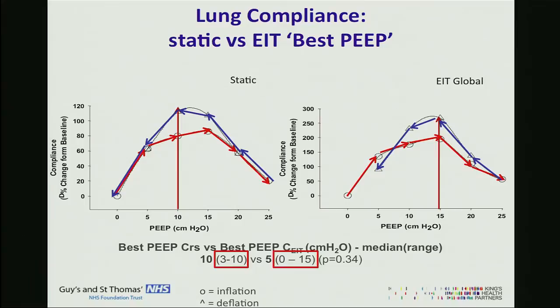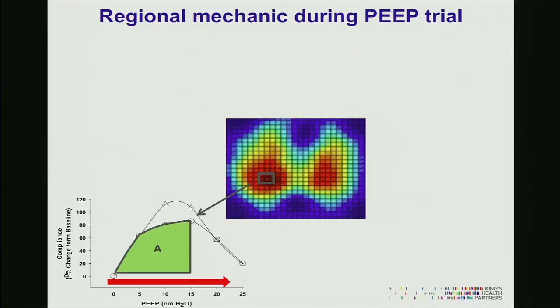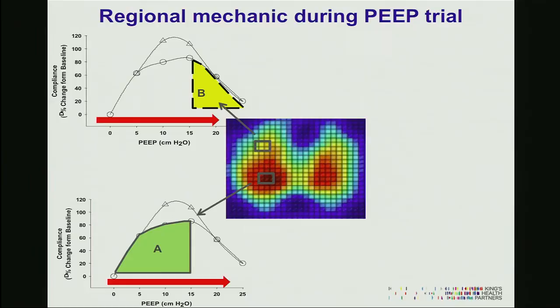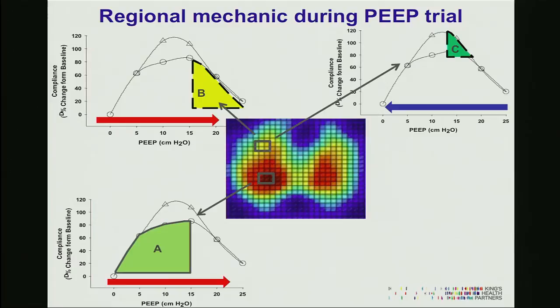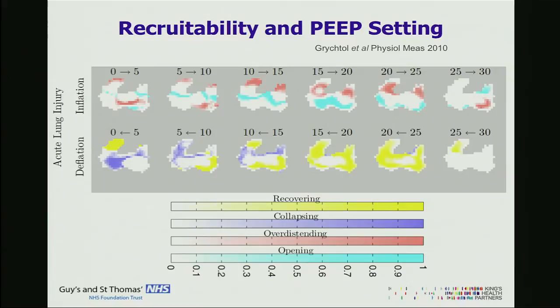When studying alveolar behaviour, some regions improve local compliance as PIP increases — these are regions that are opening. Other regions decrease local compliance as PIP increases — these are areas that are overdistending. As PIP decreases, some areas recover — these were overdistended. Other areas that were recruited will now be collapsing. We can put this into a map, showing from PIP 0 to 30 and back to 0 which areas are opening, overdistending, collapsing, or recovering. There is a clear transition between PIP 15 and 10 where collapse begins, suggesting the optimal PIP is somewhere between 15 and 10.